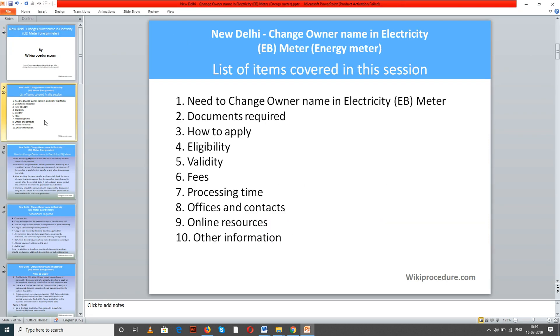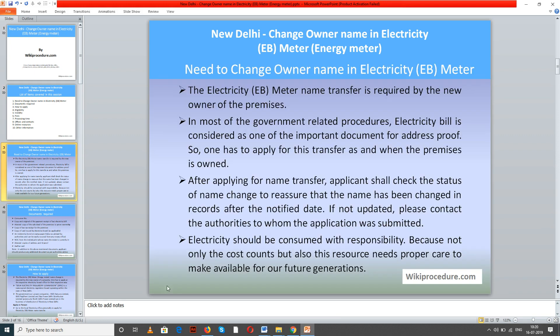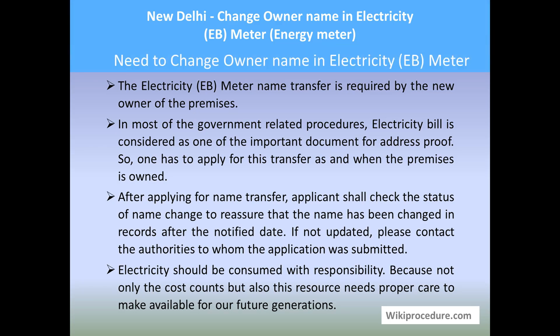Let us see the list of items covered in this session: need to change owner name in electricity EB meter, documents required, how to apply, eligibility, validity, fees, processing time, offices and contacts, online resources, and other information.